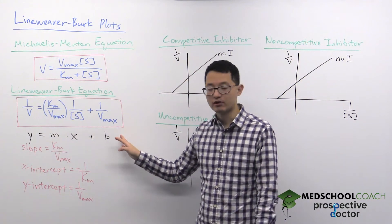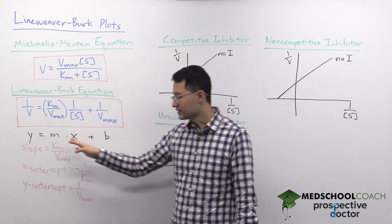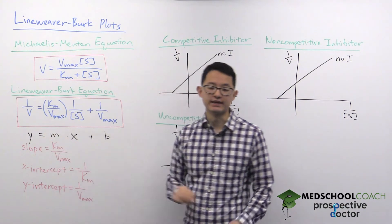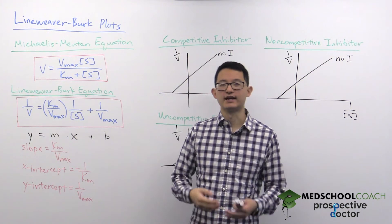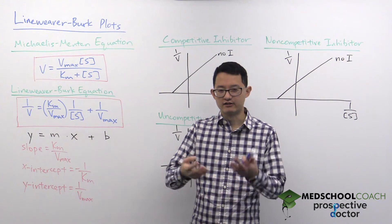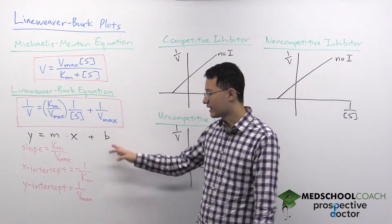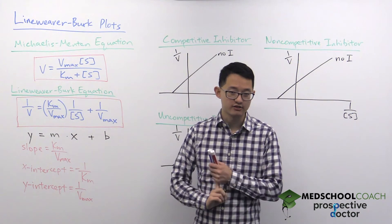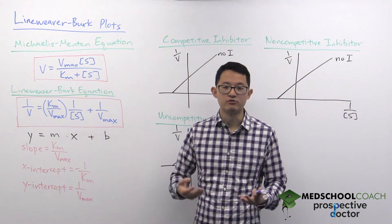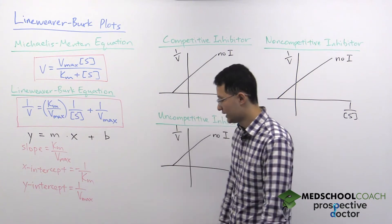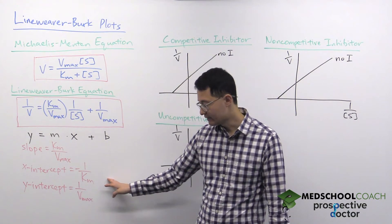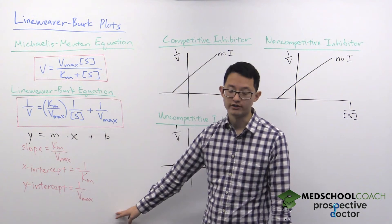The nice thing about the Lineweaver-Burk equation is that it is essentially just a linear line with the simple equation of y equals mx plus b. This is the greatest strength of the Lineweaver-Burk plot — when you look at the Michaelis-Menten saturation curve it's a little hard to interpret the data points, but with a Lineweaver-Burk plot you can easily look at the slope, x-intercept, and y-intercept and quickly understand what type of inhibitor was added. The slope is equal to Km over Vmax, the x-intercept is equal to negative one over Km, and the y-intercept is equal to one over Vmax.